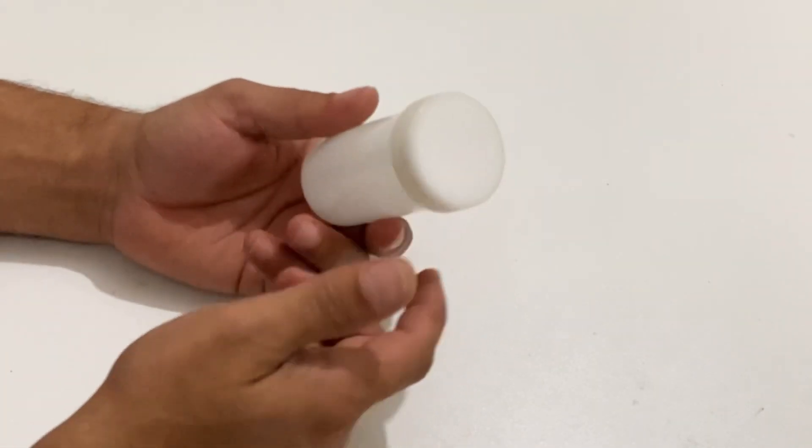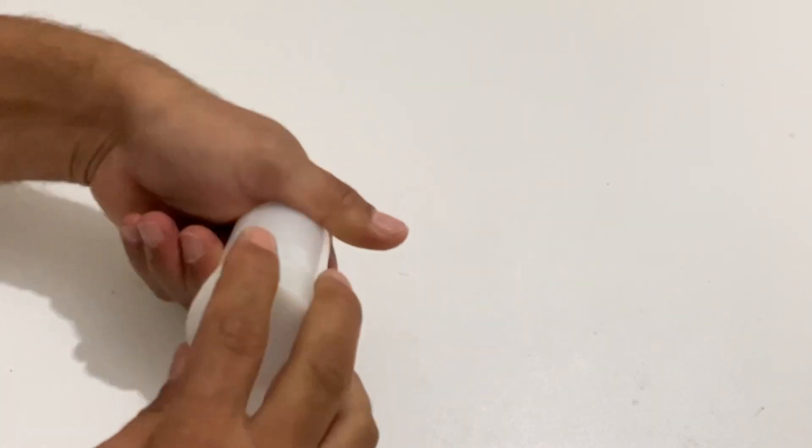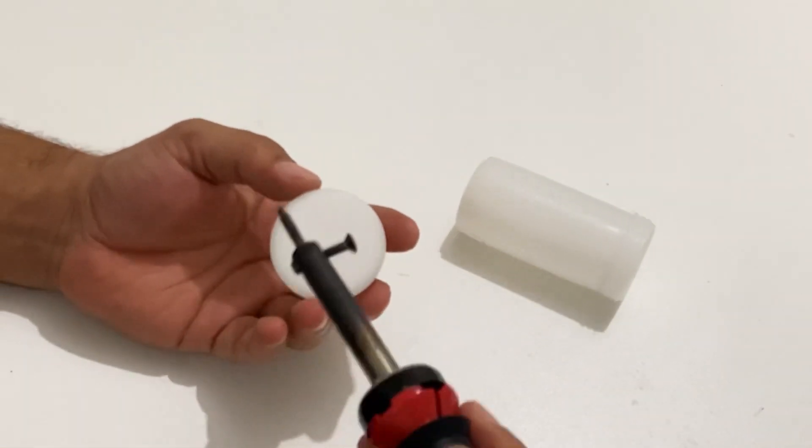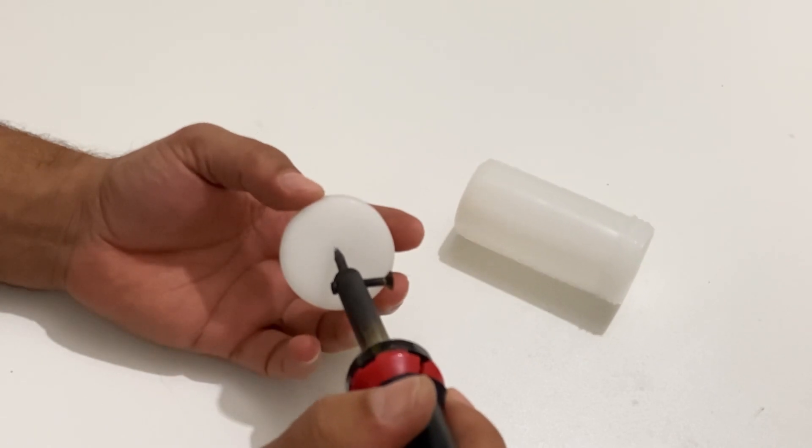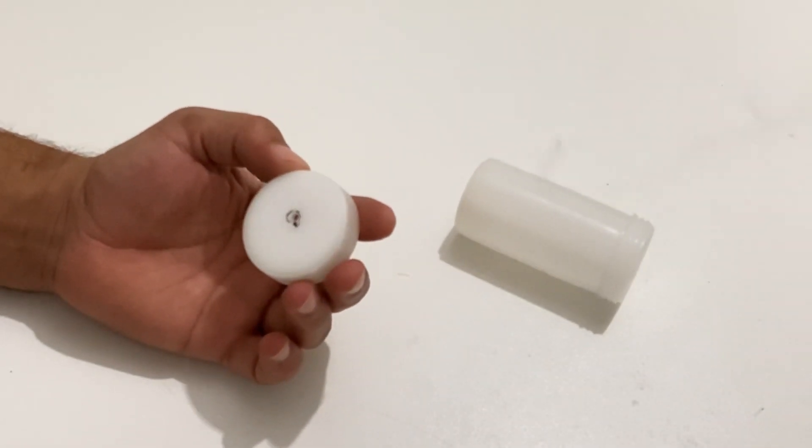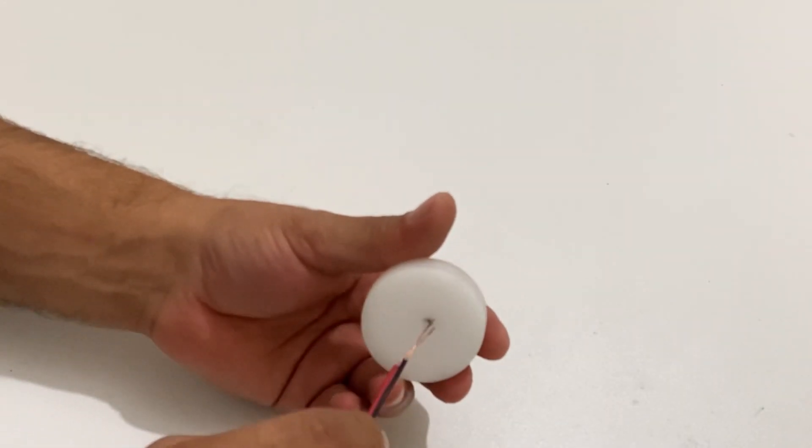Now I'm getting my white plastic tube and I will make a hole in the lid for the cables. Okay, and I just pull through the cables.